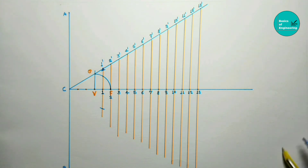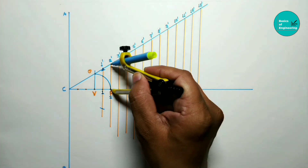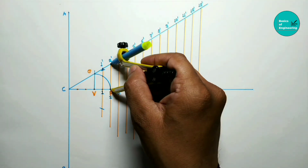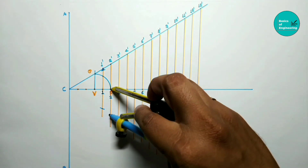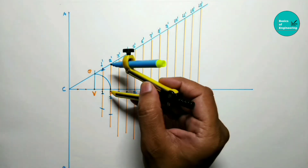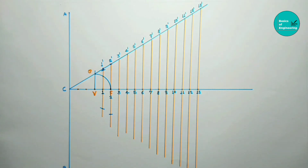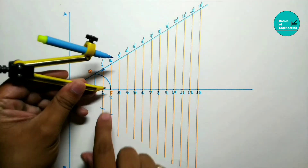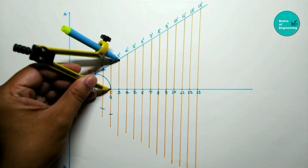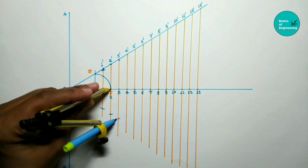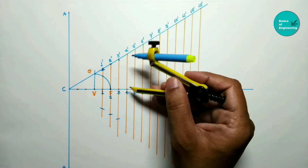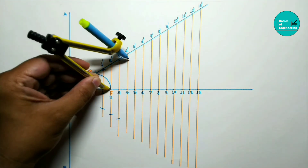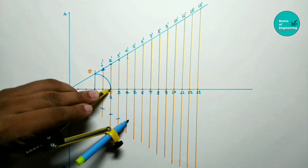Take the distance 2 to 2 dash, F as center — one arc on upside and one arc on downside. Then distance 3 to 3 dash, F as center — one arc up and one arc down. Then 4 to 4 dash, F as center — one arc up and one arc down. Continue this process for all remaining points.